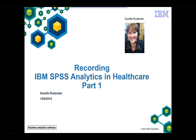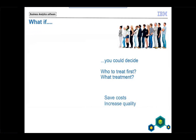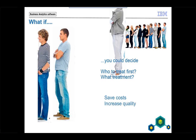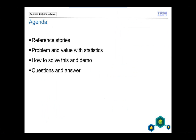How could we decrease the queue in health care? What if you could use statistical information to get knowledge that helps you to take decisions — like who to treat first? I will show that in the demo in part two. This is the agenda for these two parts, and I will start by telling you how one organization has used our solution: the No Diabetes Center.